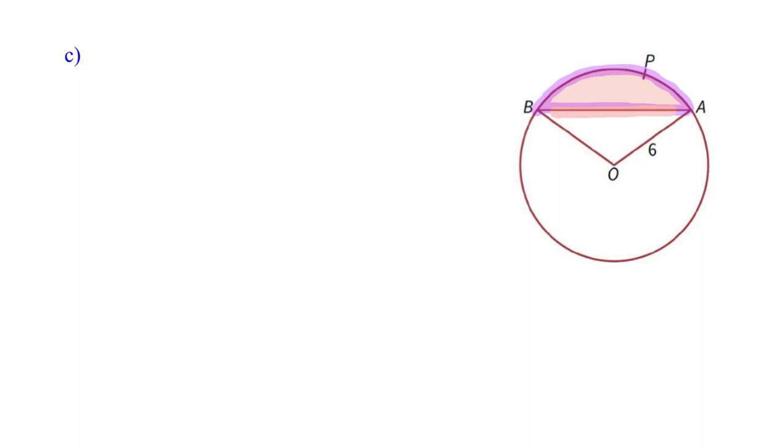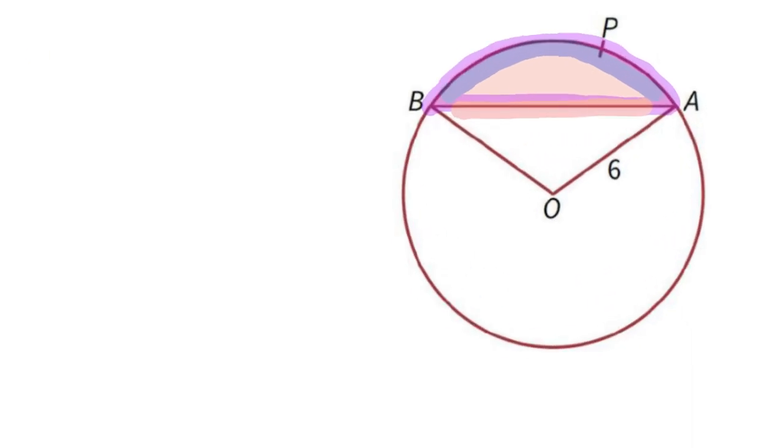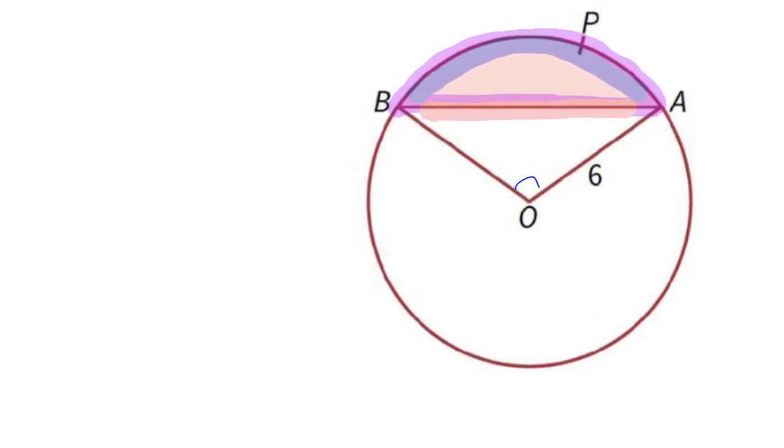I can also find my arc AB. Then I just need to add them up. Right? And because we already know this angle.